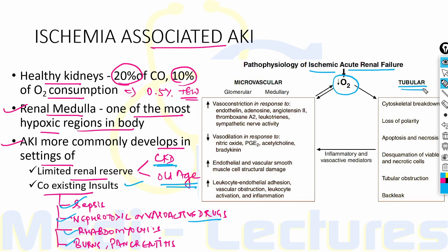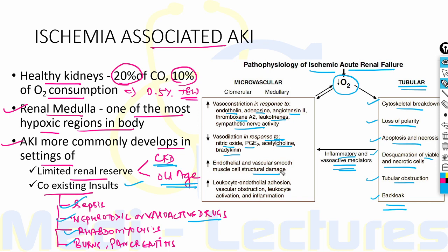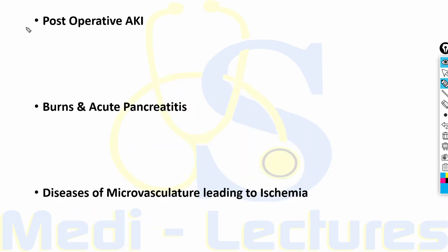In ischemic ATN, decreased oxygen delivery in the parenchyma manifests in tubules as cytoskeletal breakdown, loss of polarity, apoptosis, necrosis, desquamation of viable and necrotic cells, tubular obstruction, and back-leak of urine. This leads to inflammatory and vasoactive mediator release causing increased vasoconstriction from endothelin, adenosine, angiotensin 2, thromboxane A2, leukotrienes, and sympathetic nerve activity, decreased vasodilation from nitric oxide, PGE2, acetylcholine, and bradykinin, plus endothelial and vascular smooth muscle damage and leukocyte-endothelial adhesion, vascular obstruction, and inflammation.